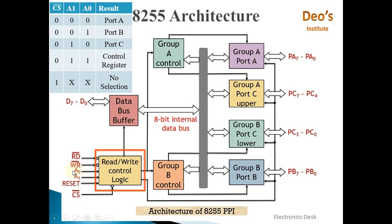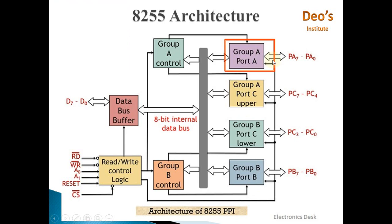So A0 and A1 pins help us select the port, and RD bar/WR bar determines whether it is a read or write operation. Port A belongs to Group A and has 8 input/output lines PA0 to PA7. This block represents the buffer of Port A — data read from PA0 to PA7 is stored in the buffer, and data to be written to port pins is also stored here.